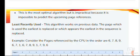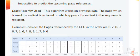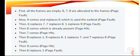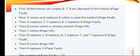The next algorithm is Least Recently Used (LRU). This algorithm works on previous data — the page which was used the earliest, or which appears the earliest in the past sequence, is replaced. Consider the same example. First, all frames are empty, so 6, 7, and 8 are allocated to the frames — those are page faults. Now 9 comes and replaces 6, which was used the earliest — this is also a page fault.